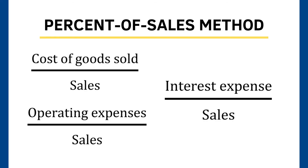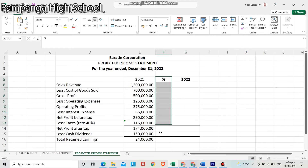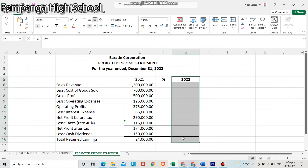We have the cost of goods sold divided by sales, operating expenses divided by sales, and interest expenses divided by sales. Applying these percentages to the firm's forecast sales, we can now prepare our pro forma income statement. You need to input the given data in the Excel sheet. For this projected income statement, we will add two columns: one for the percentage and the other for the year 2022 budget.